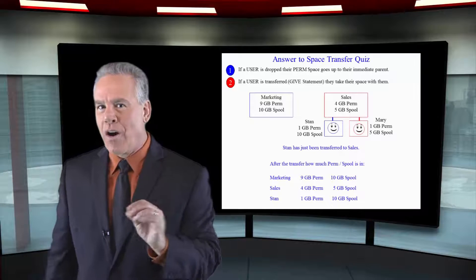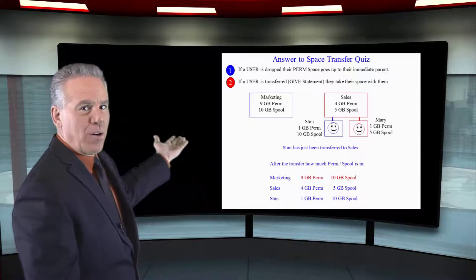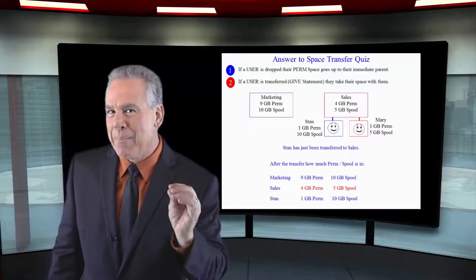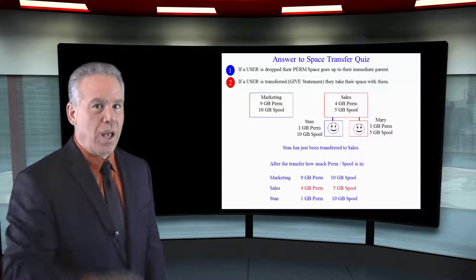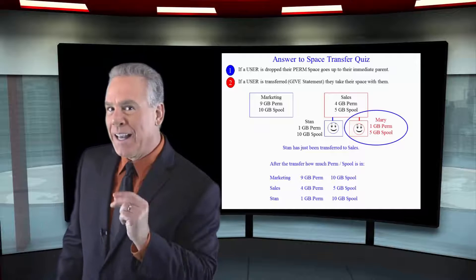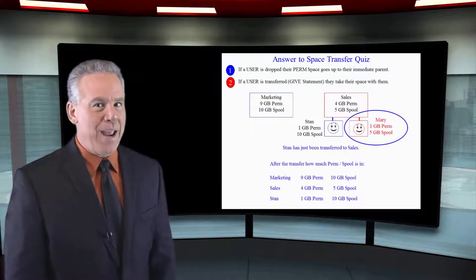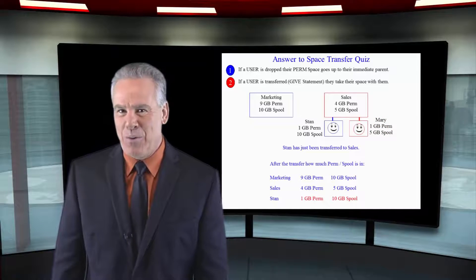Take a look at where we are right now. Marketing's got 9 gigabytes of perm, 10 gigabytes of spool. Sales has 4 gigabytes of perm, 5 gigabytes of spool. Mary's got 1 gigabyte of perm, 5 gigabytes of spool. And our man Stan, 1 gigabyte of perm, 10 gigabytes of spool.